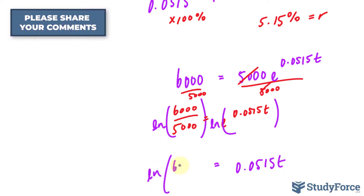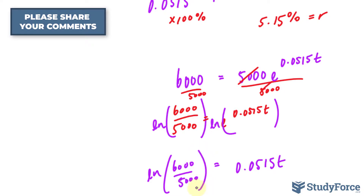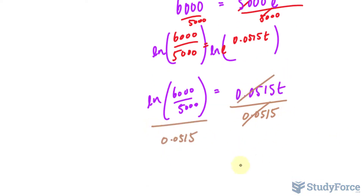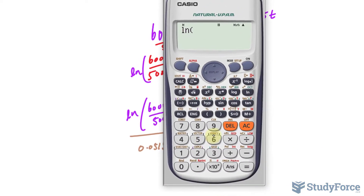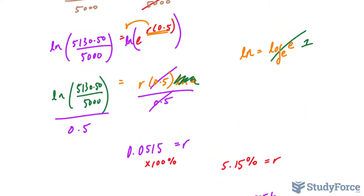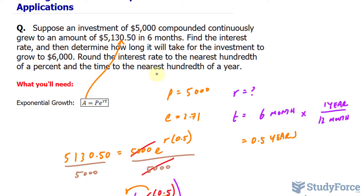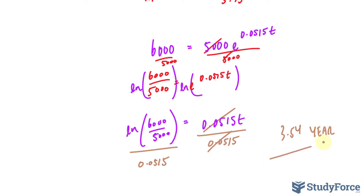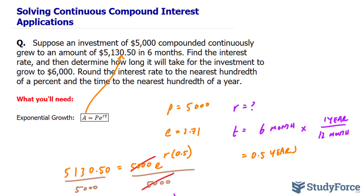We have the same ln expression on the left side. Dividing both sides by the coefficient 0.0515 cancels it out, and we compute ln(6,000 divided by 5,000) divided by 0.0515, which gives us T equals 3.54 years. They want the answer to the nearest hundredth — the digit after 4 was 0, so the answer stays 3.54 years. It takes 3.54 years for the investment to grow to $6,000, which is $1,000 more than the initial investment. That is how to solve continuous compound interest applications.